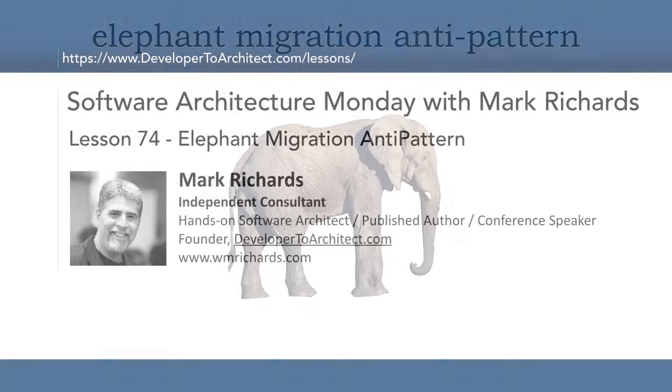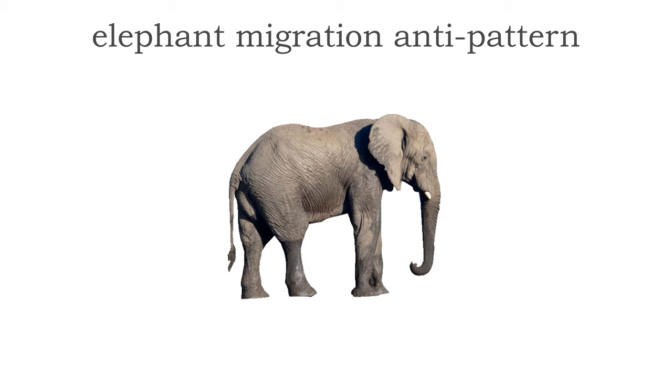I was recently teaching an online class through O'Reilly Media and we came across this situation and somebody asked, can you describe the anti-patterns? I kind of named it during that recent class. I call it the elephant migration anti-pattern when migrating from monolithic applications to microservices because there was a point in that class where I basically said, how do you eat an elephant?